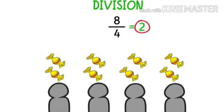How did we get this 2? Yes, we divided 8 by 4 and that gave us 2. Or in other words, we divided the number of chocolates available equally among all the people.